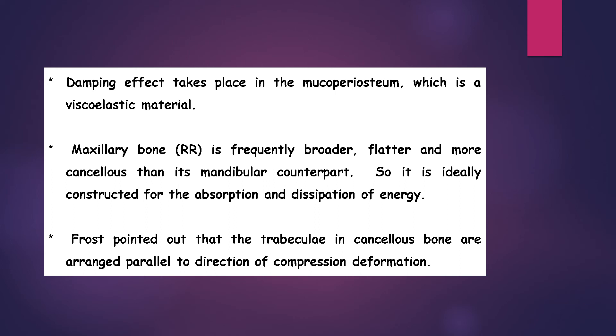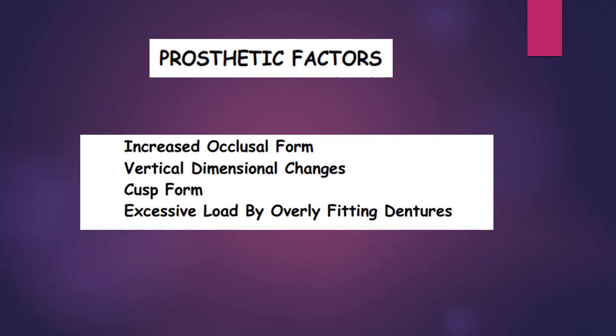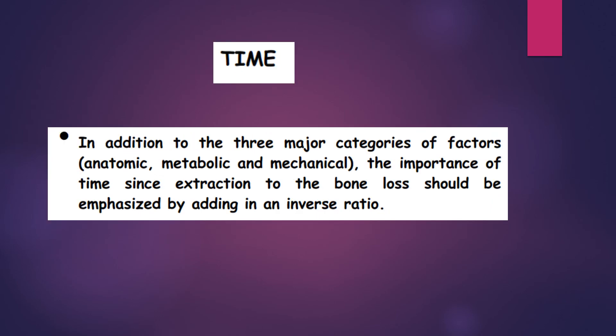Frost pointed out that trabeculae in cancellous bone are arranged parallel to the direction of compression deformation. Coming to prosthetic factors: increased occlusal form, vertical dimension changes, cusp form, and excessive load by overly fitting dentures.